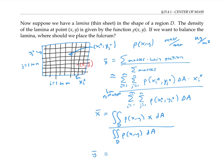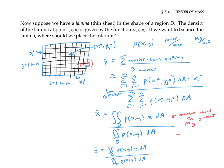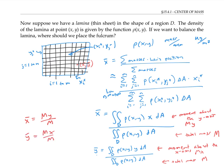An analogous expression gives ȳ, and although the argument was given for a rectangular region, the same formulas work for any shape. The numerator for x̄ is called the moment about the y-axis, written Mᵧ, while the denominator is the total mass M. Similarly, the numerator for ȳ is the moment about the x-axis, written Mₓ. So in a textbook you'll see x̄ = Mᵧ/M and ȳ = Mₓ/M. The way to remember this: x̄ is the horizontal position of the fulcrum to avoid rotation around the y-axis, while ȳ is the vertical position to avoid rotation about the x-axis.